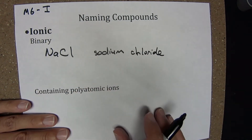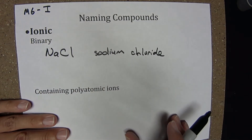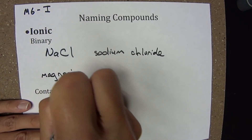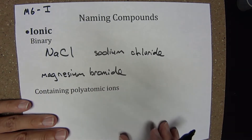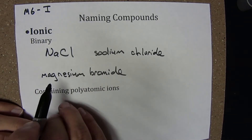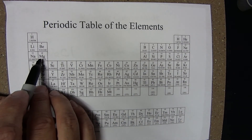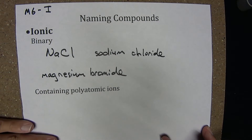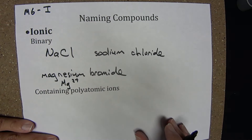You should be able to go both ways — from the formula to the name, but also from the name to the formula. For example, we should be able to come up with the formula for magnesium bromide. Magnesium on the periodic table is a group 2A alkaline earth metal. When it exists as an ion, it tends to carry a +2 charge, so magnesium here would be a +2 cation.